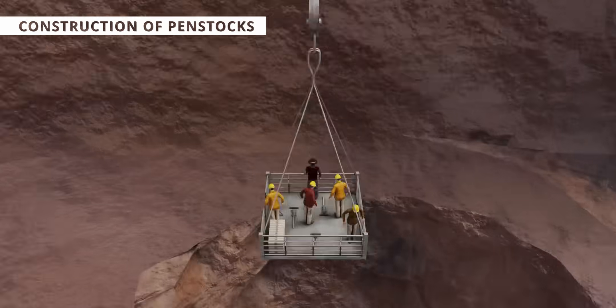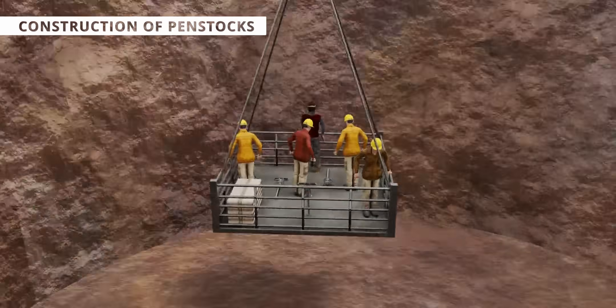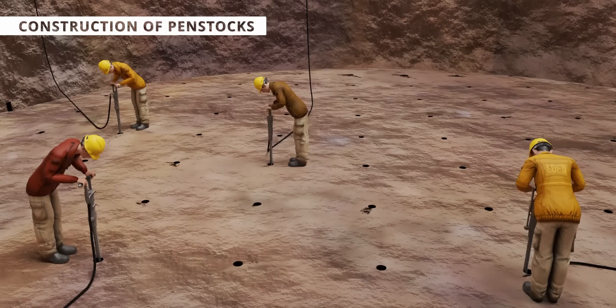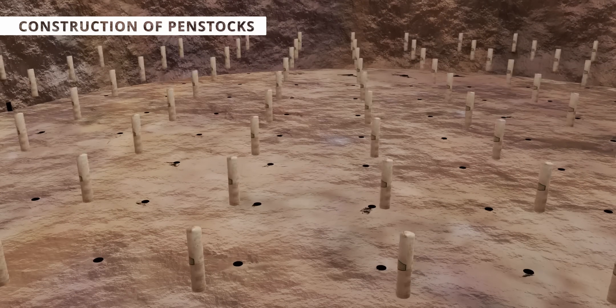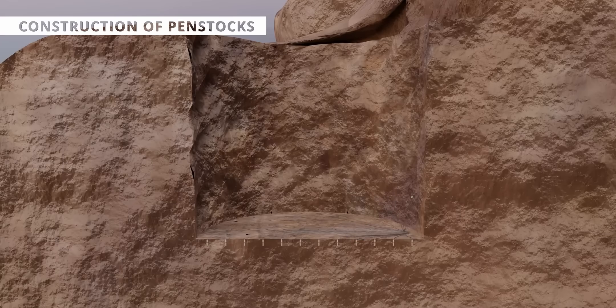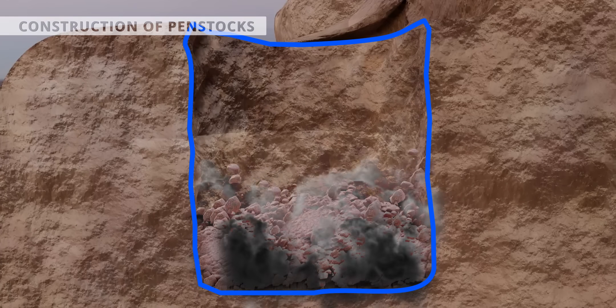Using the cableway, workers were lowered into these giant holes. Their main duty was to drill the holes for the dynamite. Then it was time for the dynamite's controlled explosion.